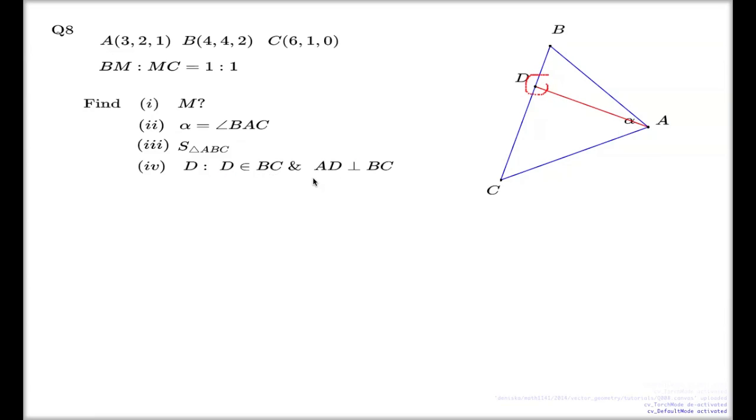It's clearly visible. We need to find such a point D such that AD is perpendicular to BC. This is a clear case for the projection formula. All we have to do is take the vector BA and project it on BC, and that will return the projection BD.